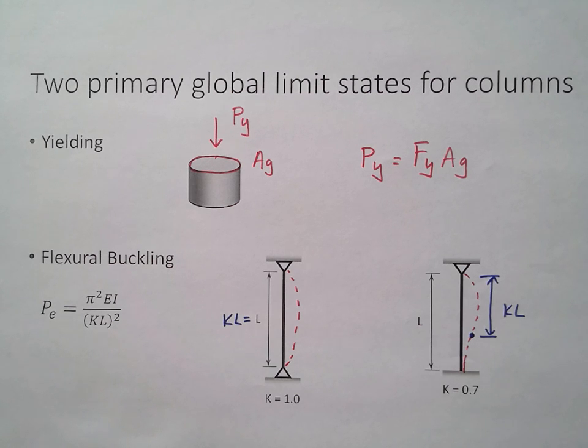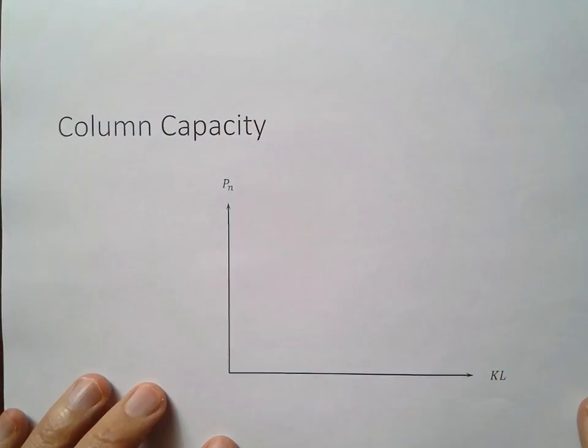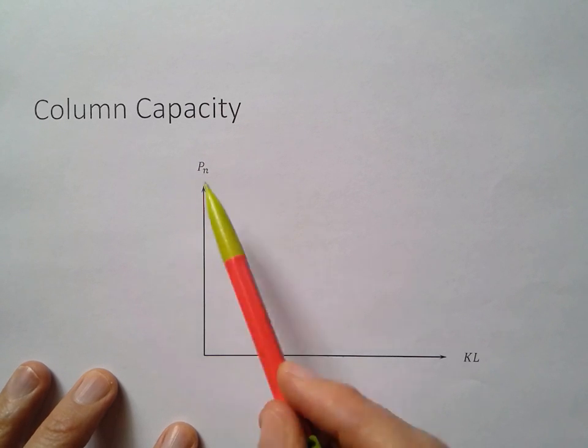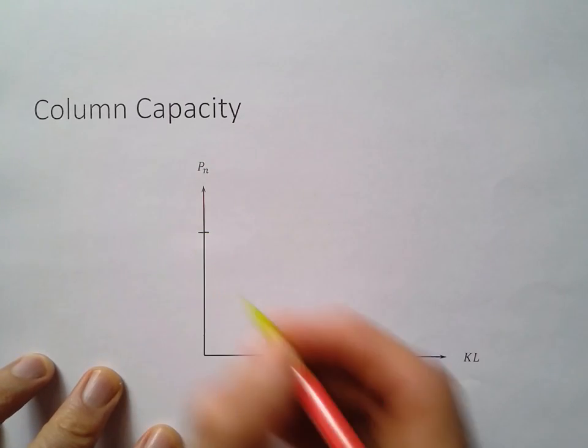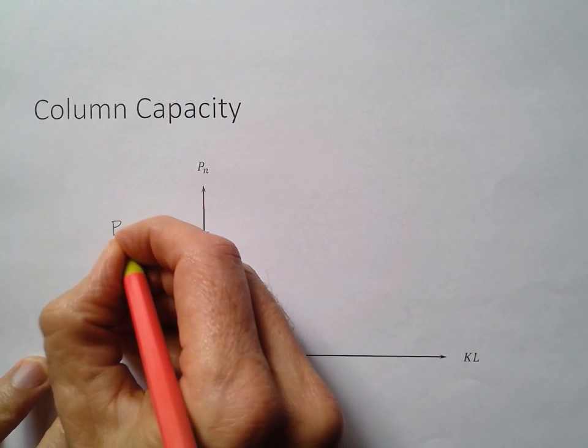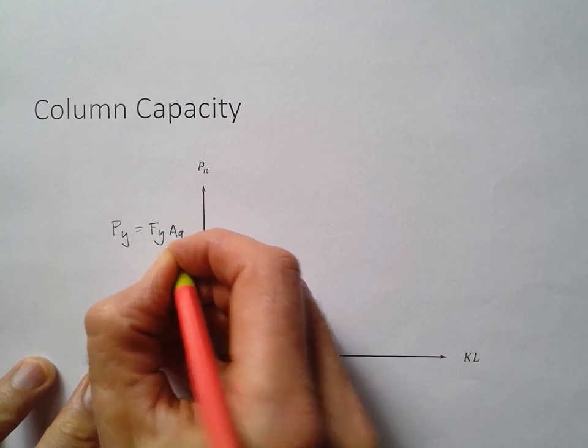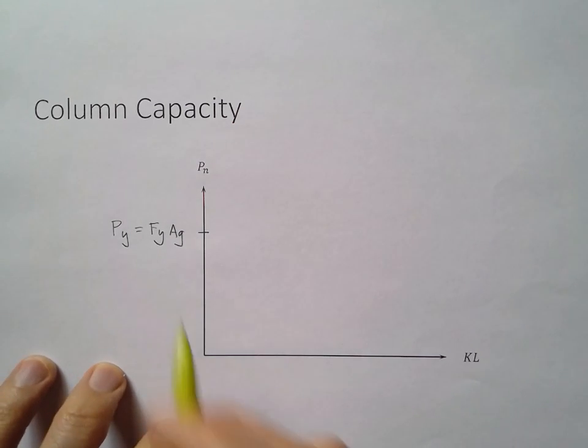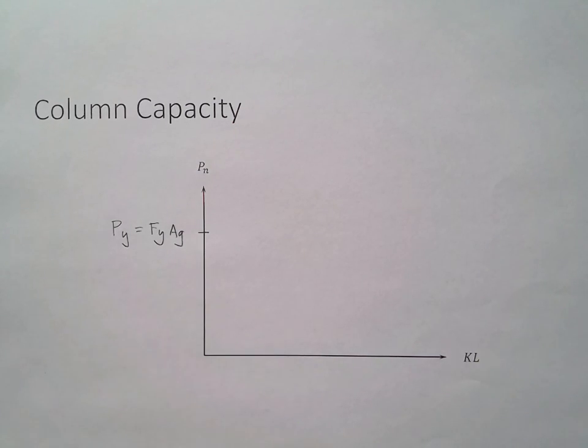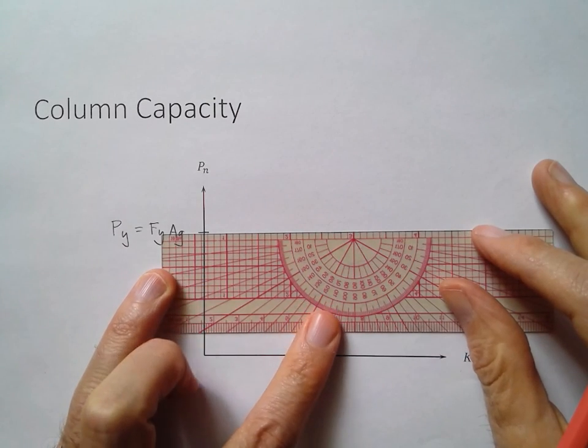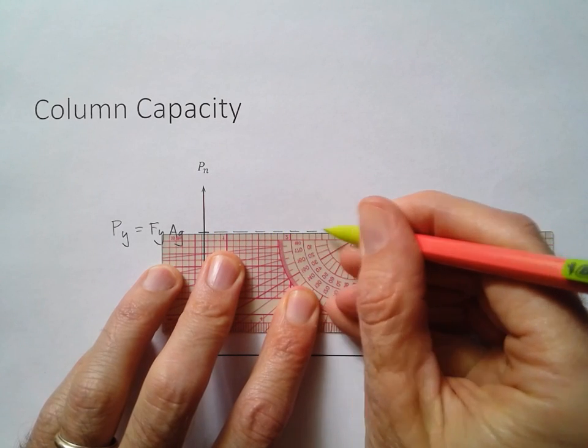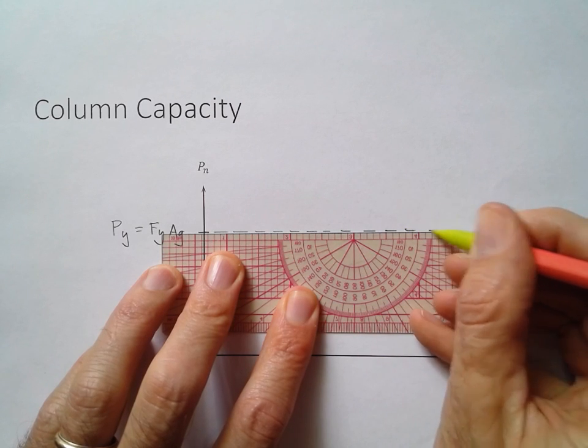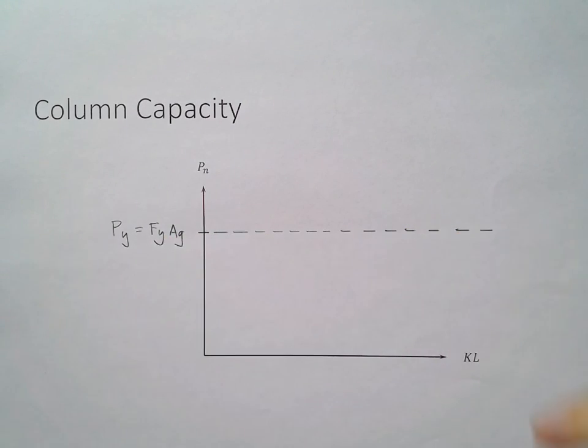That's how buckling works. Now, if we look at depending on the length of the column, one of these two limit states is going to control. If we plot that out, here's a graph here, and P sub N is the nominal capacity up here. K sub L is that effective length. Based on what we just said, there's going to be some yield force. P sub Y, I said that was equal to F sub Y times A_G. Nothing in that equation has to do with the length. So that means that that capacity, that yielding capacity, is constant the whole way. I'm just going to use a straight line here. Theoretically, once I hit that P_Y, the section is going to yield and it will have failed.